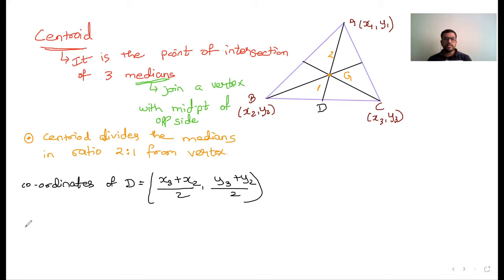So we can write the coordinates of centroid G using section formula. This is X3 plus X2 upon 2, this is X2 for this median AD. Y3 plus Y2 upon 2.